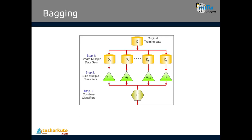Let us see how the bagging approach actually works. We have the original training data, which is divided into t different parts: d1, d2, d3, d4, up to dt. Every subset is trained on a different classifier. When predictions are made on new data, every classifier predicts and the output predicted by the majority of classifiers becomes the final output — this is majority voting. Combining algorithms in parallel fashion is exactly the way random forest and bagging work.